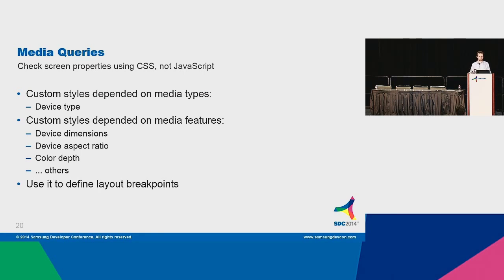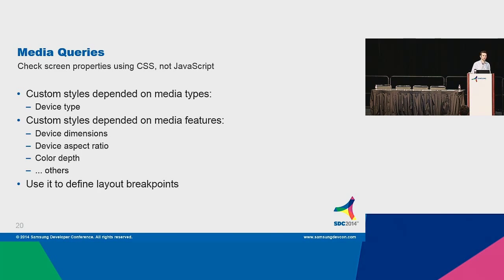Media queries are the best way to accomplish responsive layouts. They give the developer an easy way for defining breakpoints. You can create a set of conditions based on device type — for example, TVs, handheld, screen, whatever. You can also check device aspect ratios, device dimensions, color depth, and there are plenty of options for creating rules. Using breakpoints in your layout, you define how your layout will behave in different conditions.